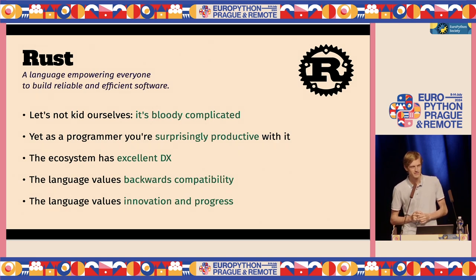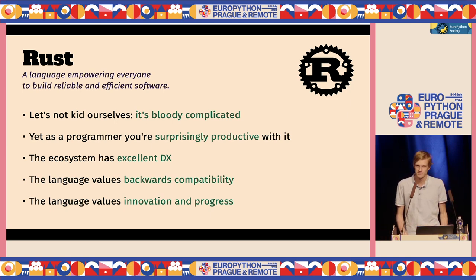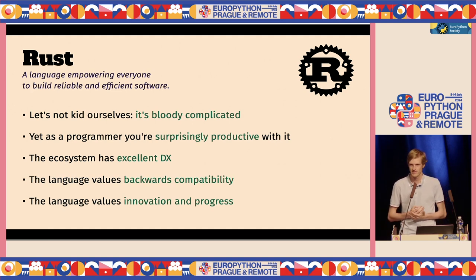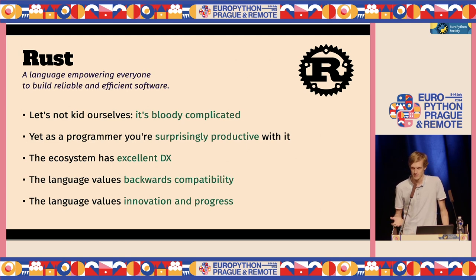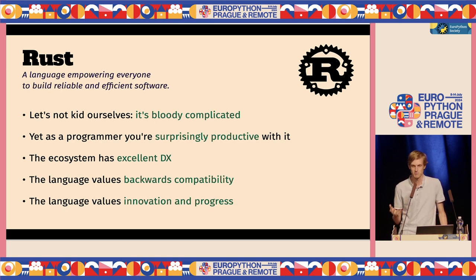Quick detour to Rust. The tagline is 'a language empowering everybody to build reliable and efficient software.' It's a little bit of a lie because everyone will not enjoy Rust — it's very complicated compared to Python. But you are surprisingly productive writing Rust code if you sit in the space where Rust is actually productive. The main reason a lot of people like writing Rust code is the developer experience is really great. Syntax autocomplete in most editors works really well. Packaging is solved.